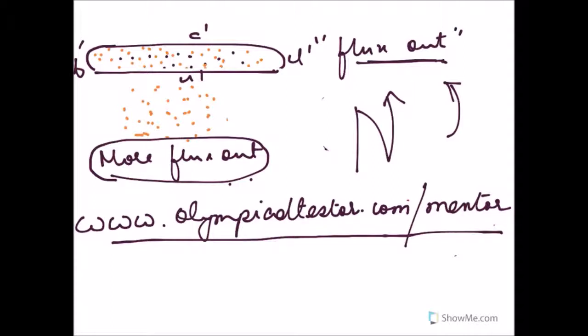So it has to produce more flux out, as given by these orange dots. To produce more flux out there has to be a north polarity, and hence the direction of current in the new shape should be in the anti-clockwise direction.